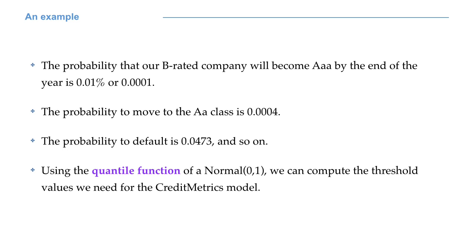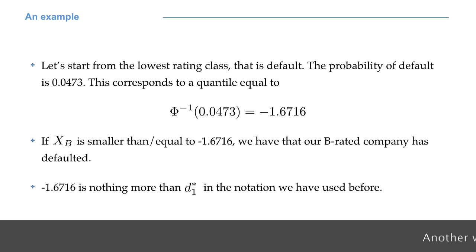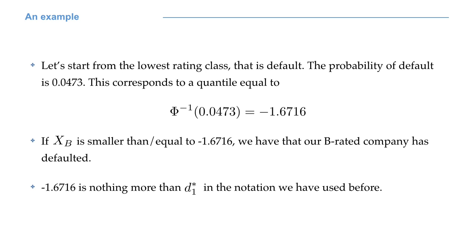Using the quantile function of a standard Gaussian, we will now compute the threshold values we need for the CreditMetrics model. Let's start from the lowest rating class, that is default. The probability of default is 0.0473. This probability under the standard normal quantile function corresponds to a value of minus 1.6716. If x capital B is smaller than or equal to minus 1.6716, we have that our B-rated company defaults by the end of the year. Notice that minus 1.6716 is simply the D1 star threshold. How can we compute the quantiles? Clearly with R, using the QNORM function.